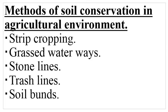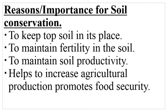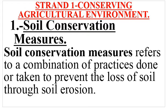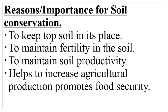Welcome to our lesson 1 part 2, where we want to look at methods of soil conservation in an agricultural environment. Last time we talked about the definition of soil conservation measures, where we said that this is a combination of various practices which are done to prevent loss of soil through soil erosion.